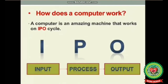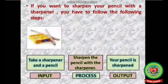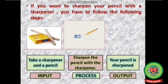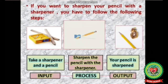Let us take one example to understand the IPO cycle. Take a sharpener and a pencil — the pencil and sharpener are your input. The process is to sharpen the pencil with the sharpener. When you sharpen your pencil with the sharpener, the output is your sharpened pencil. In this similar way, a computer also works using the IPO cycle.